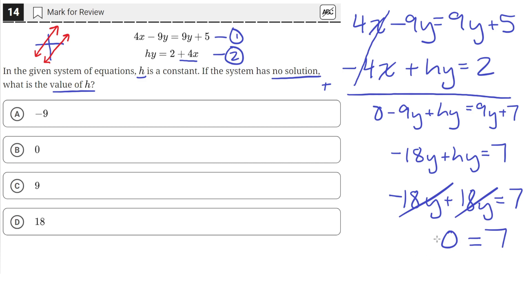And because we result in an equation that's not true when we set h equal to 18, this means that at an h value of 18, the equation has no solution. So h is equal to 18. And that's answer choice D.